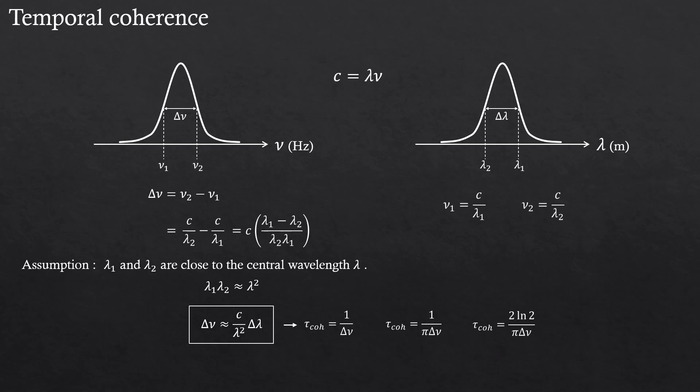Anyway, once you reasonably obtain the coherence time, just multiply it by the speed of light to obtain the temporal coherence length, which is also called longitudinal coherence length. This longitudinal coherence length represents how far the wave packet can propagate while keeping temporal coherence.